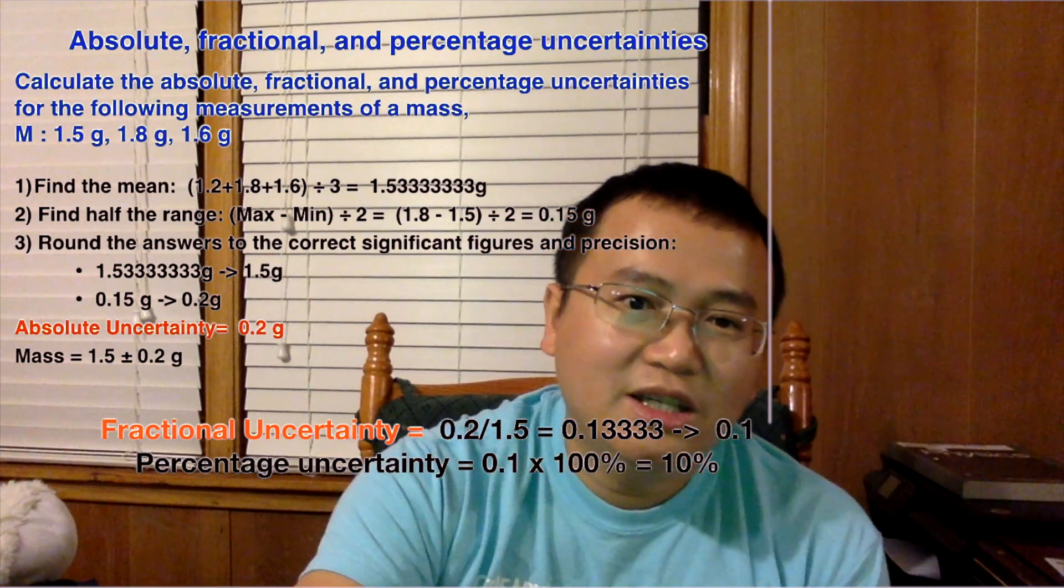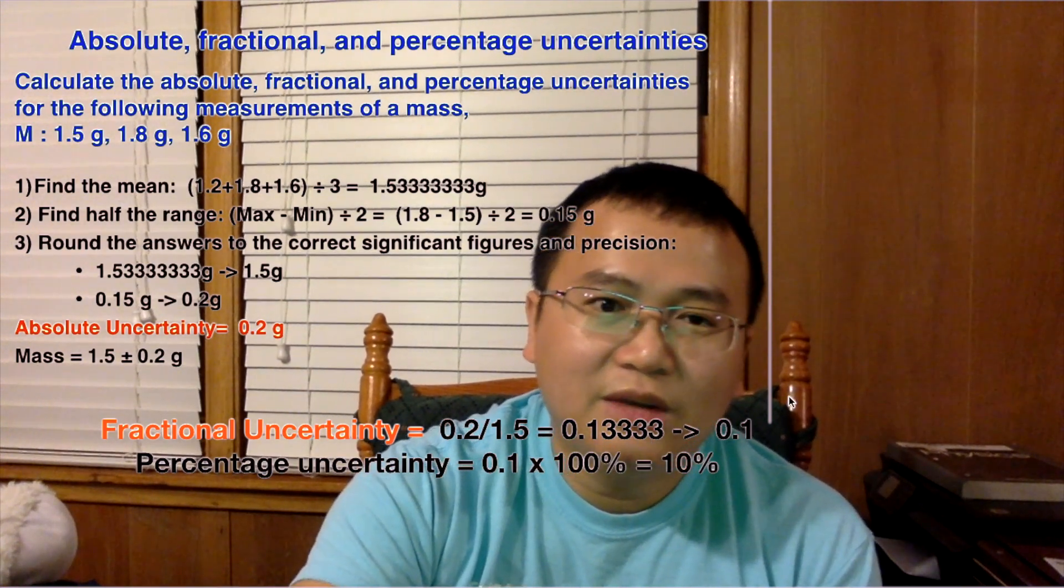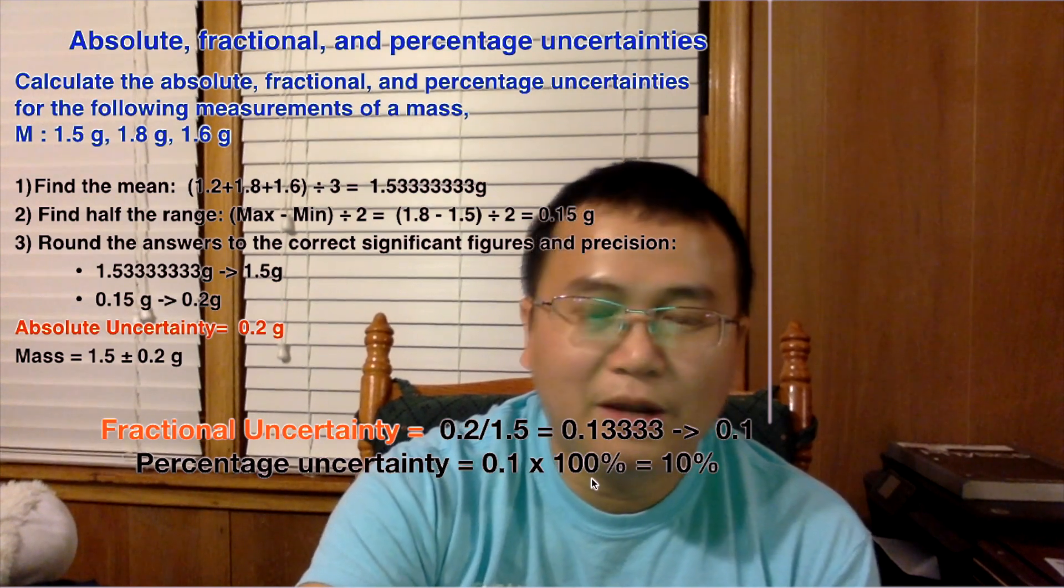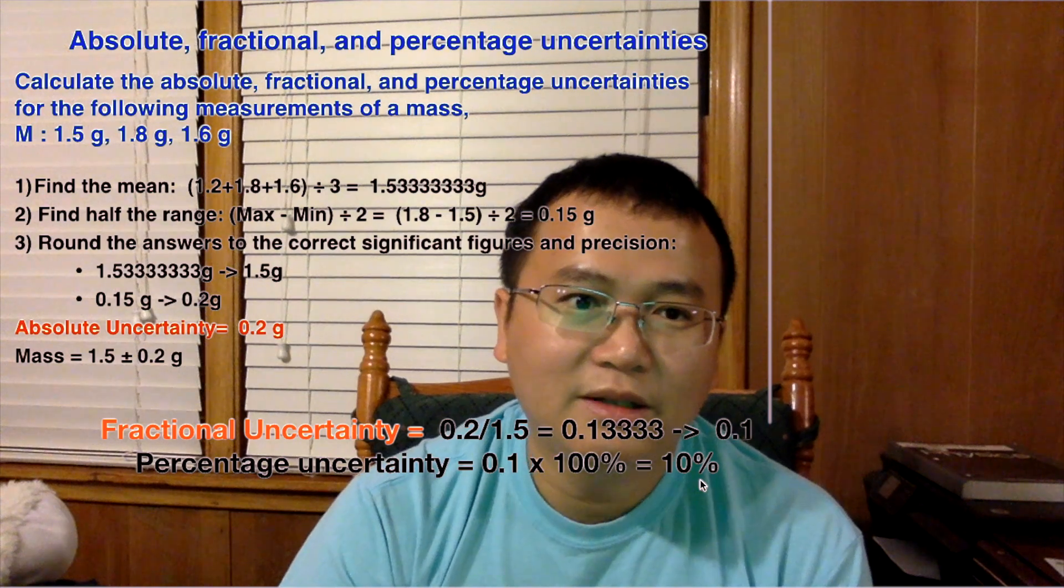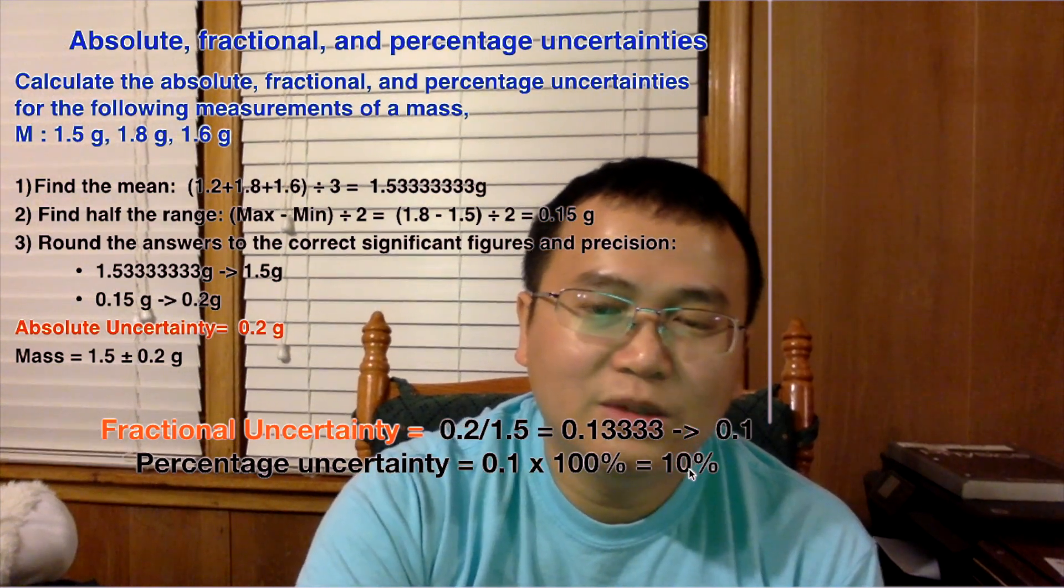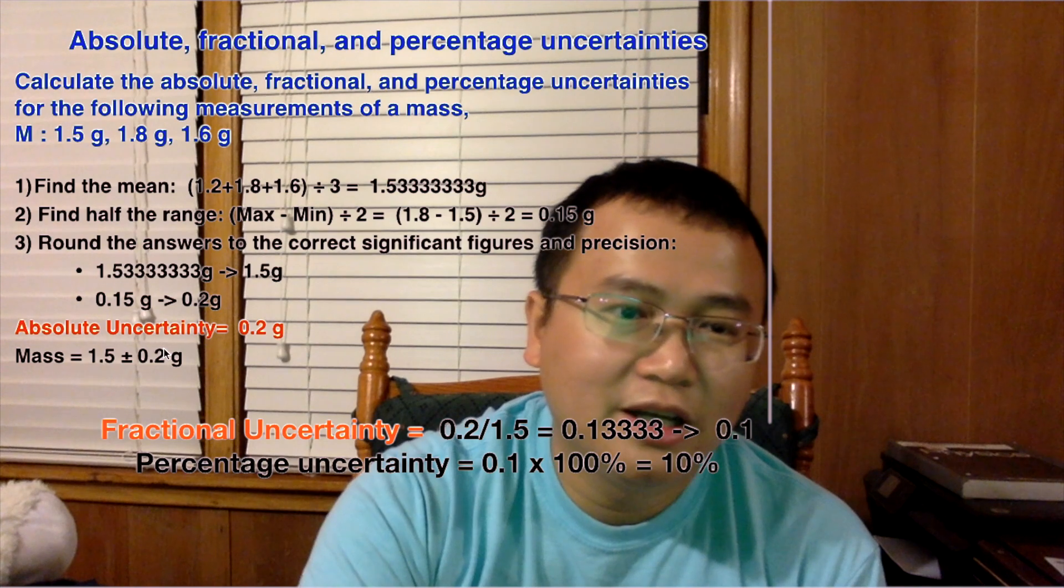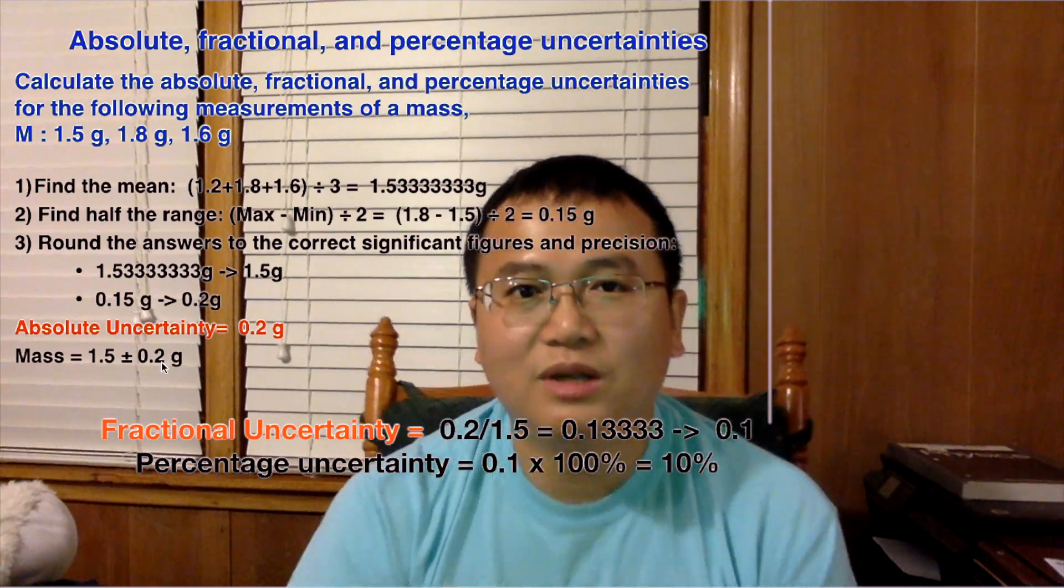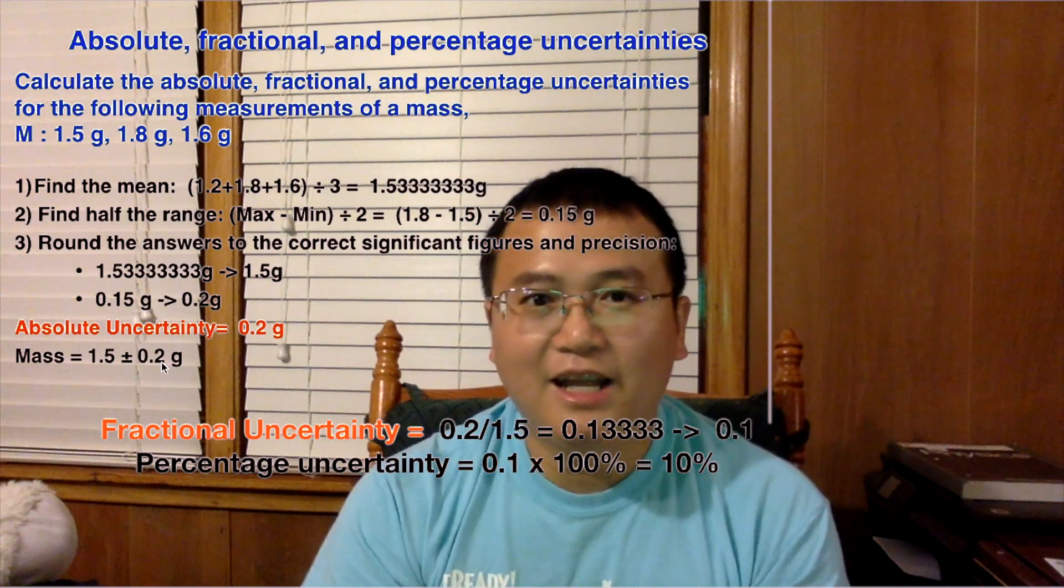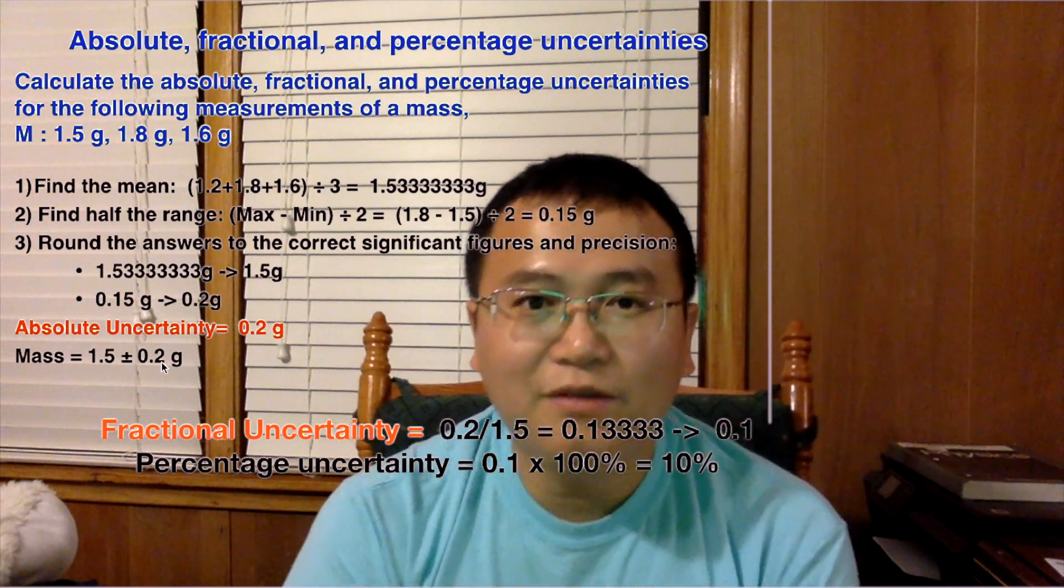The percentage uncertainty, all you need to do is take the value here, the fractional uncertainty, multiply by 100, and when you do that you get 10%. If you look at your uncertainty, which is one significant figure, and you look at the uncertainty here is also one significant figure, then you know that you have done it correctly. That's pretty much it for this problem. Have a wonderful day.